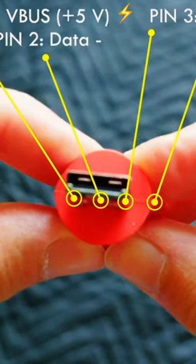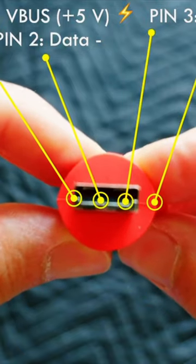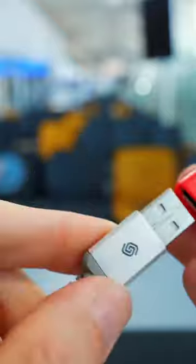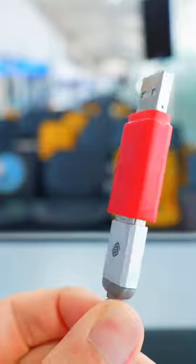These port-a-pow, these little blockers there, what they do is they block the data pins so that only power can go through and it's going to protect your phone from downloading anything malicious potentially from a tampered with USB port.